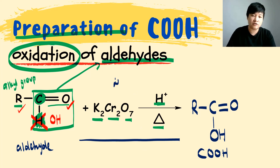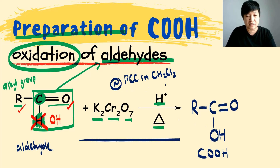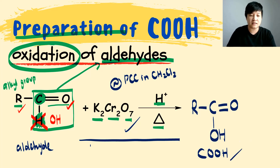To be honest, you can also use PCC in inert solvent here, but it will be slower. Since we are getting the same product, why use the mild oxidizing agent? You can straight away use the strong oxidizing agent since it's faster and gives the same result. So you can always use the strong oxidizing agent to produce your carboxylic acid from your aldehyde.